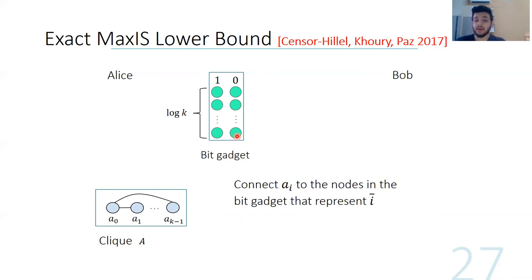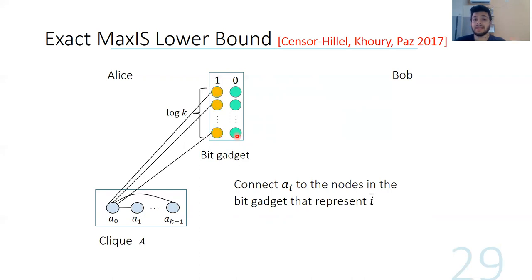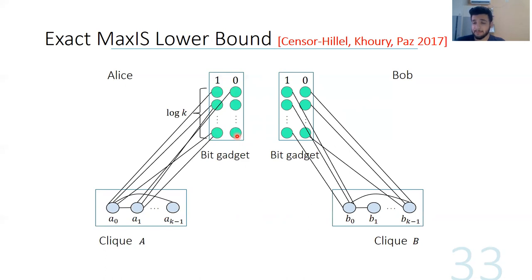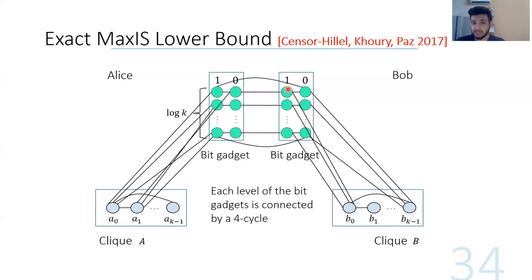We connect the clique to the BitGadget as follows: we connect A_i to the complement of the binary representation of i, considering binary strings of length log K. For example, A_0 is connected to the all-ones string because the binary representation of zero is all zeros. The construction is completely symmetric for Bob — he has the same clique and BitGadget. Each row in the BitGadget is connected via a 4-cycle, where zeros are connected to ones and vice versa.